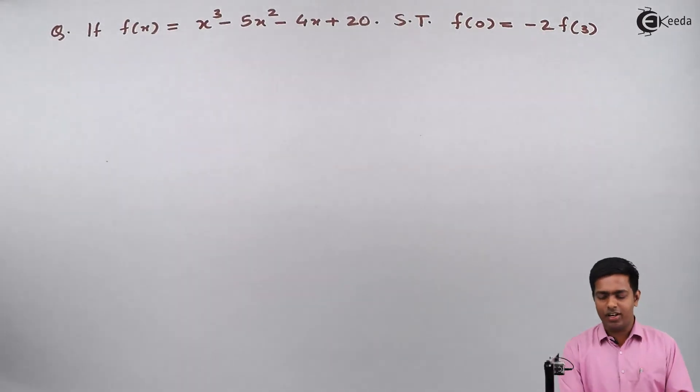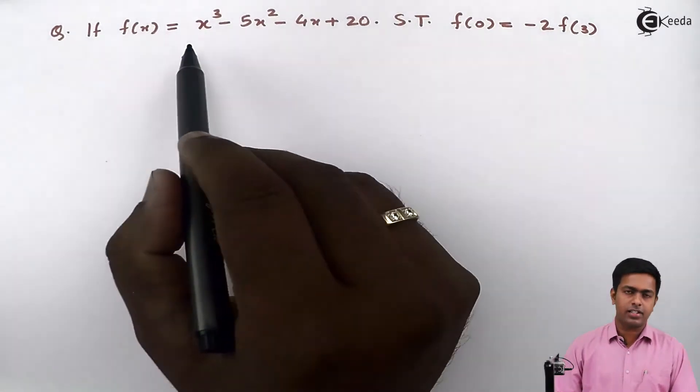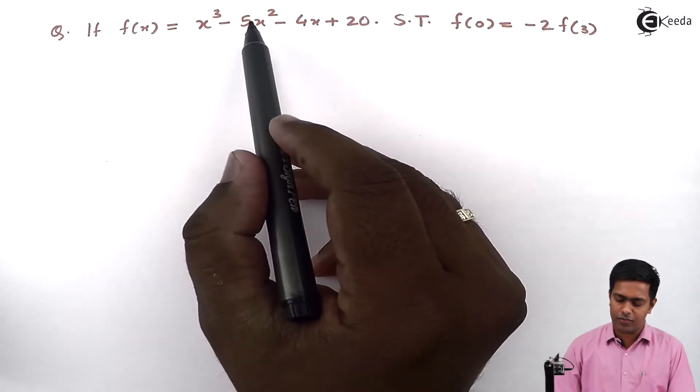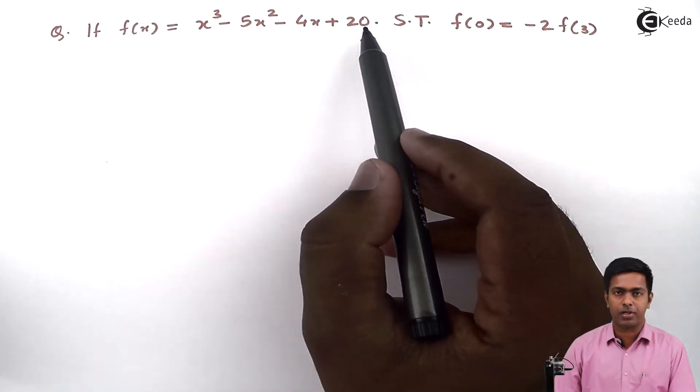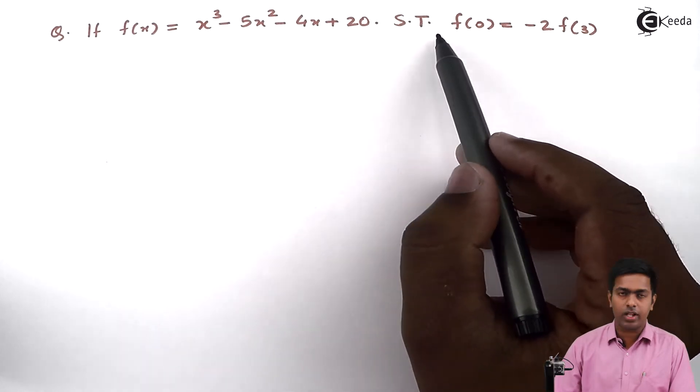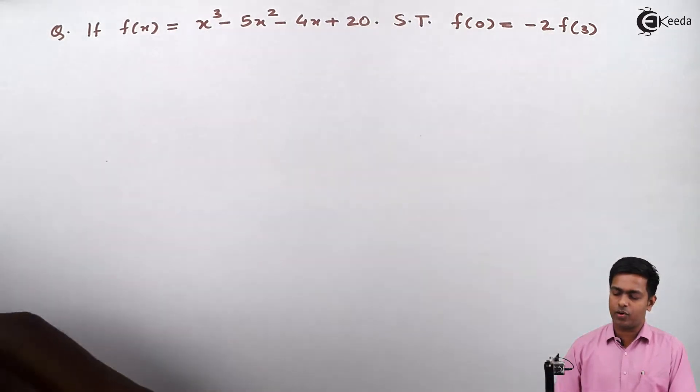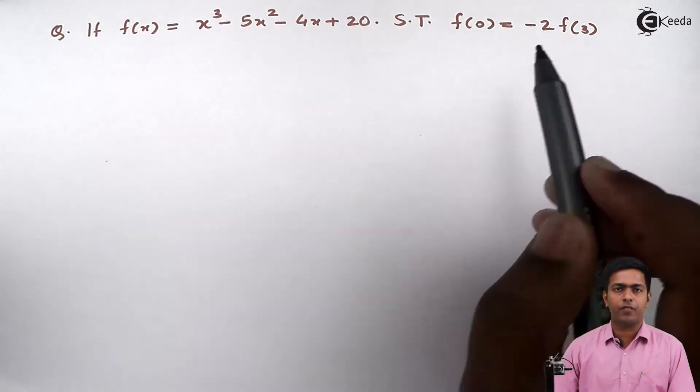Hello everyone, so here we have been given f(x) = x³ - 5x² - 4x + 20, and we have to show that f(0) = -2f(3).